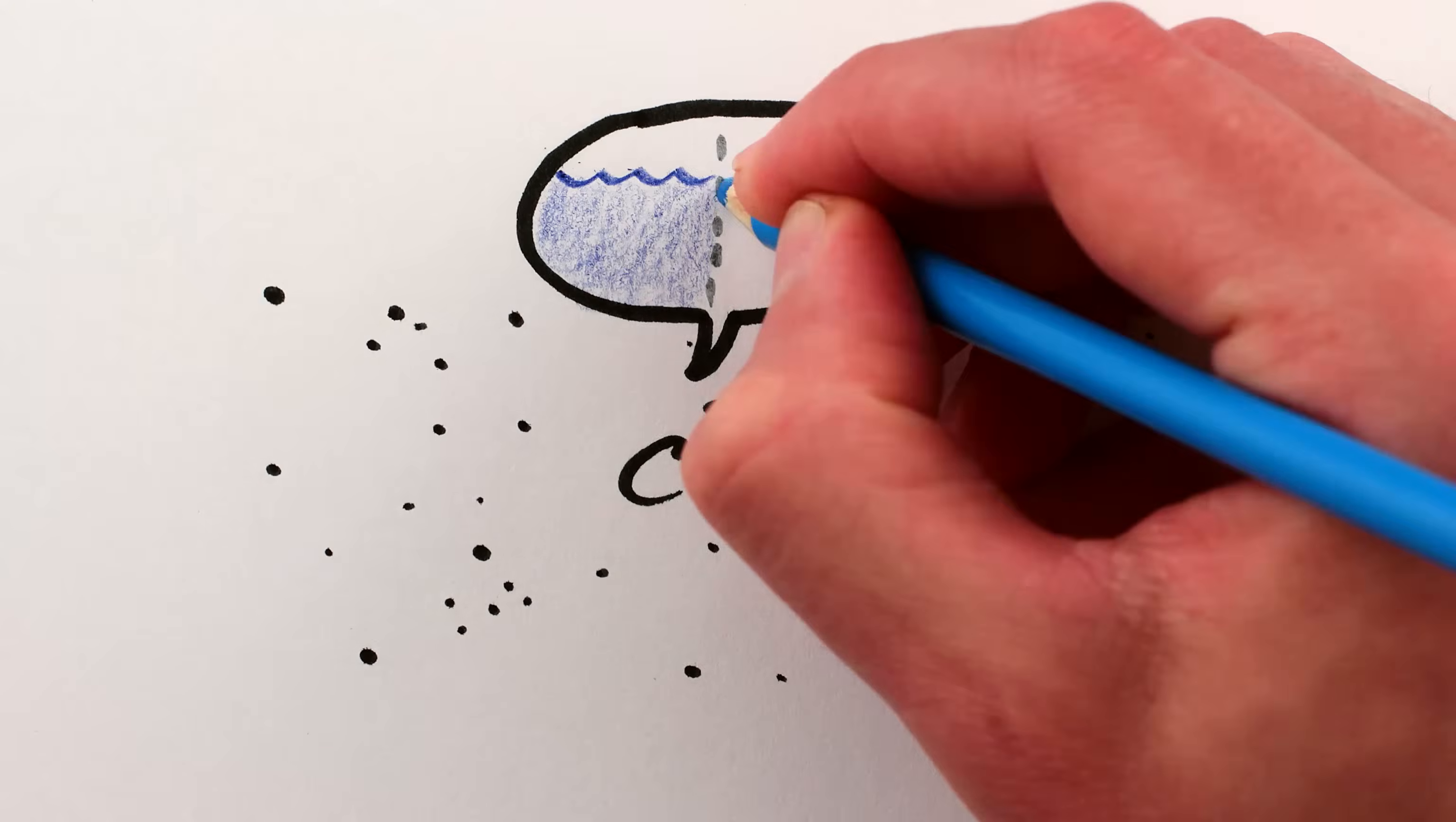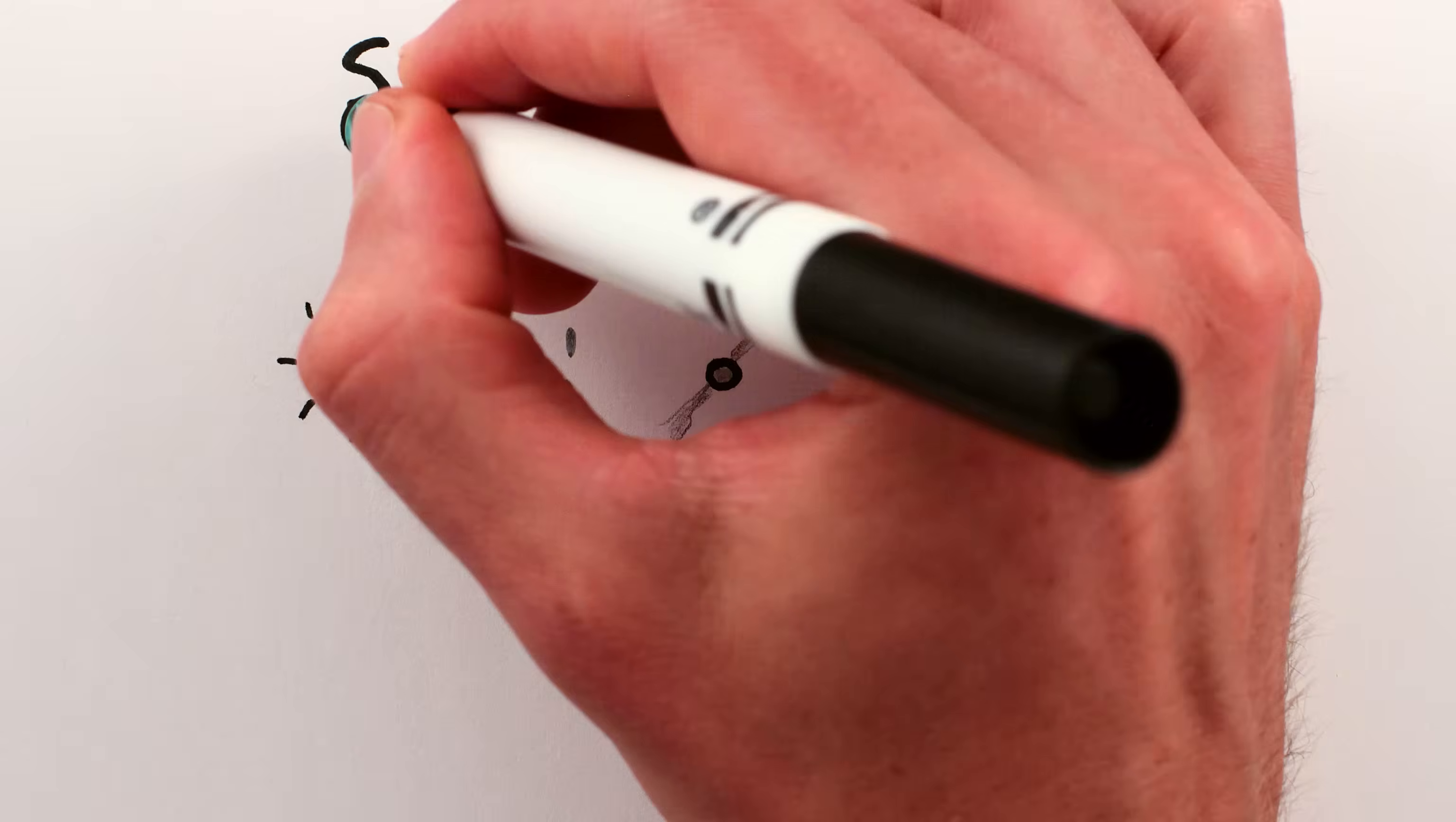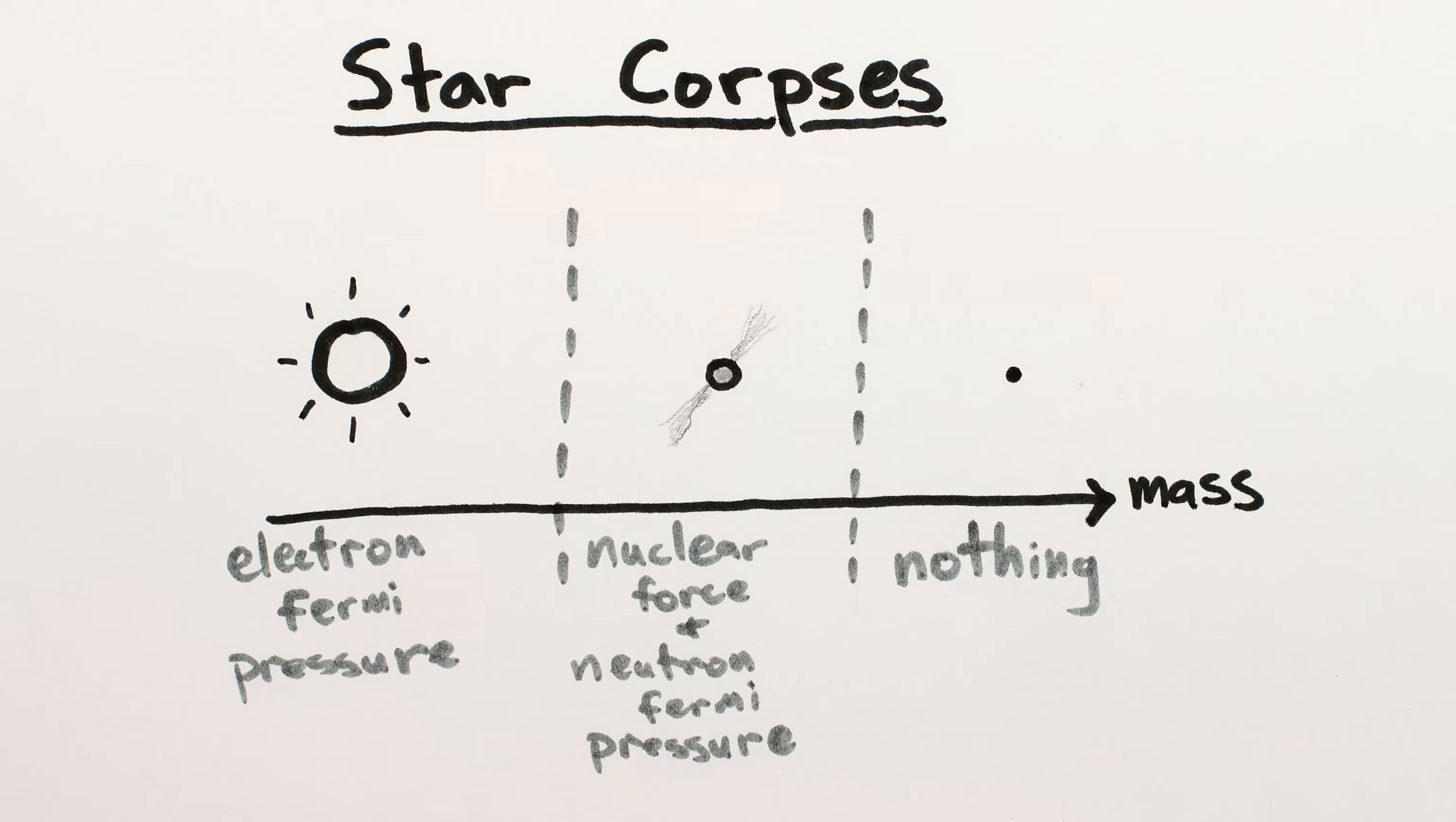However, sometimes nature gives us a helping hand and provides a hard physical line distinguishing two things, like the difference between white dwarf stars, neutron stars, and black holes. These are the different possible corpses of dead stars, and what distinguishes them is how they hold themselves up against the inexorable attraction of gravity.